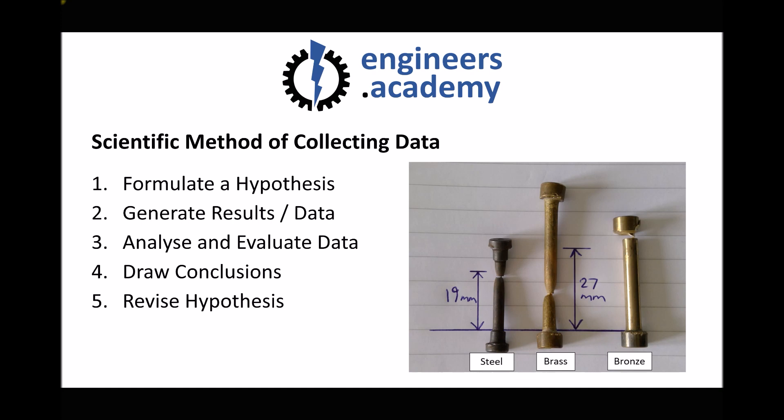If we treat this in isolation, I might formulate a hypothesis such as brass is more brittle than bronze, or steel is more malleable than bronze. I would then conduct the test to generate results. When analyzing and evaluating the data, I would look at those three test pieces against my original hypotheses and draw conclusions based on what I've seen and what I originally predicted.